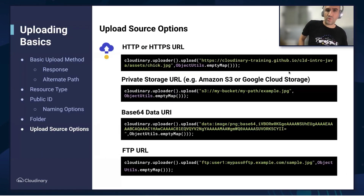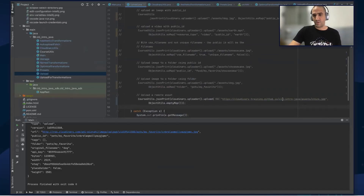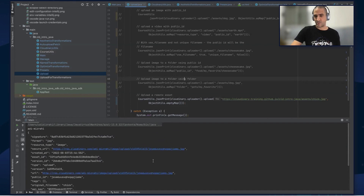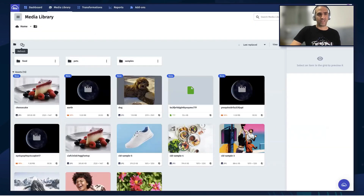Upload source options. Before, we showed uploading assets from local files stored on our machine, but that's not the only way. You can upload from an HTTP or HTTPS link — instead of the local asset path, you give a URL. You can also use an S3 bucket, a base64 data URI, or an FTP URL. In this example, we're going to upload chic.jpeg, which is hosted on the Cloudinary training page, straight from the URL to our cloud. Running this code, we got the result. Checking the URL, we can see the chic image. Going to our cloud and refreshing, we can see the chic image is now on our cloud.